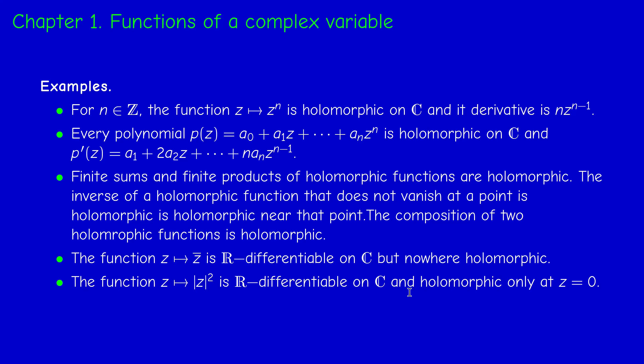A last example: |z|² is holomorphic only at the point z = 0. Since |z|² = x² + y², it is R-differentiable with partial derivatives of all orders. But writing u = x² + y² and v = 0, the Cauchy-Riemann equations ∂u/∂x = ∂v/∂y give 2x = 0, so x = 0; and ∂u/∂y = −∂v/∂x gives 2y = 0, so y = 0. The equations are satisfied only at the origin, so |z|² is holomorphic only at z = 0.